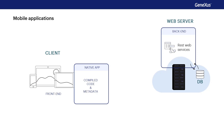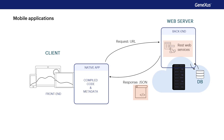When the application is executed, it accesses the web server to run the programs — the services — that will return the necessary data, which will be processed by the application and displayed to the user on the device. One advantage is that the application will never directly access the database. This will always be done through the service layer, and this layer will be independent of the device being used. That is to say, if we compile an application for Android and for iOS, both applications can use the same service layer.